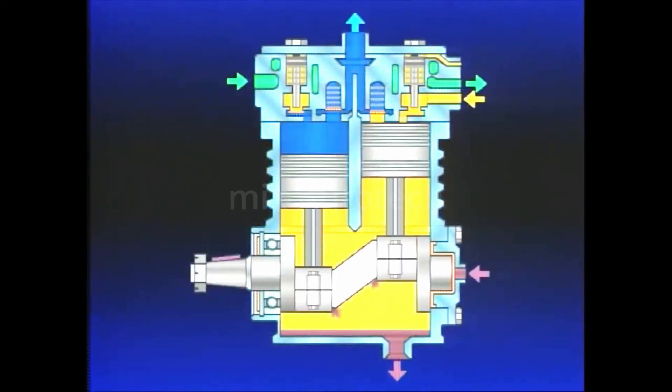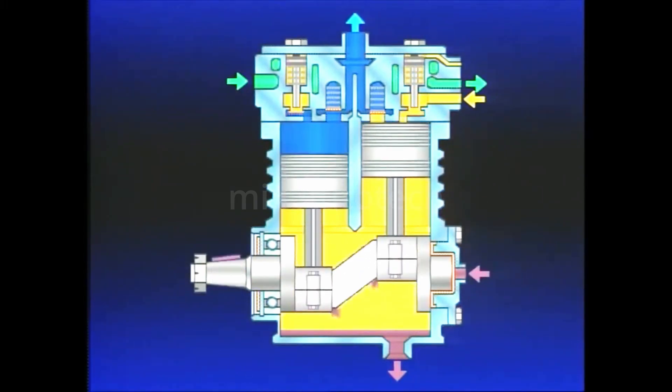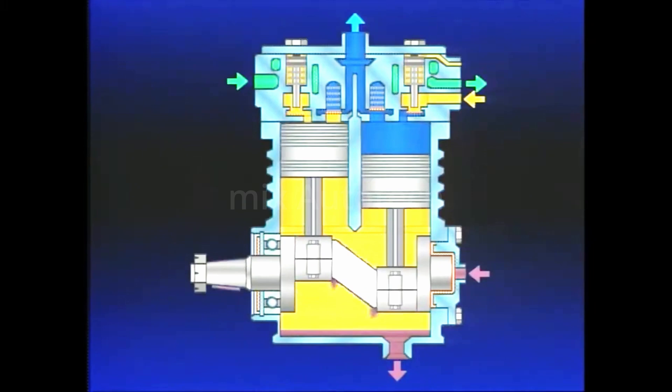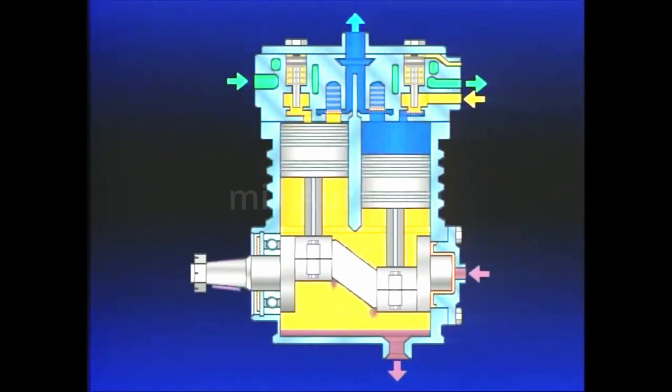Returning to our full cutaway view of the compressor, we find that since the compressor contains two cylinders and the crankshaft has 180 degree opposed journals, one piston will be on its intake stroke, while the other is compressing, building to maximum pressure.